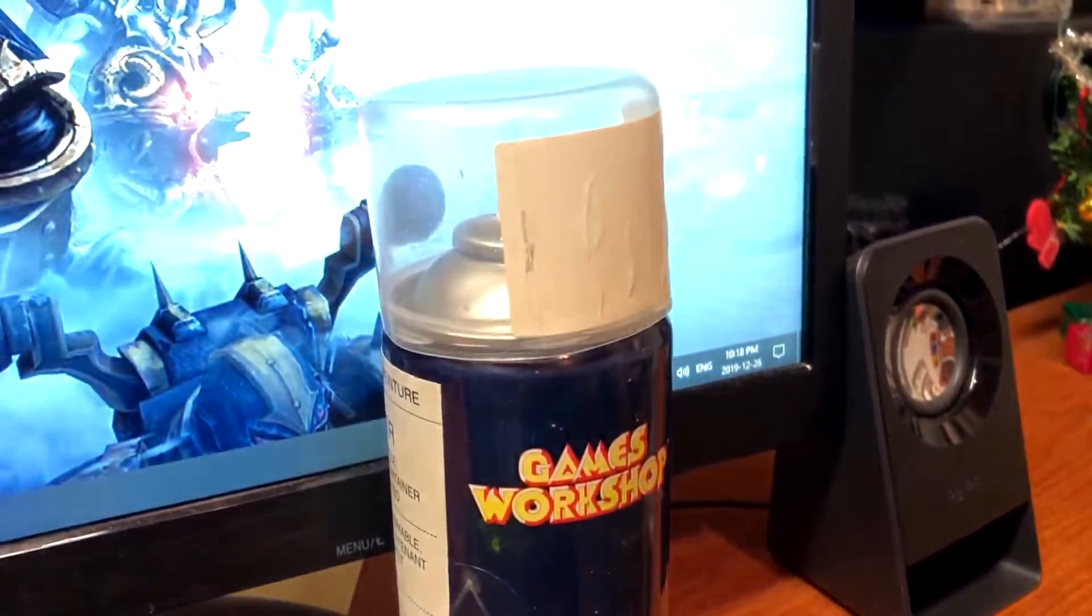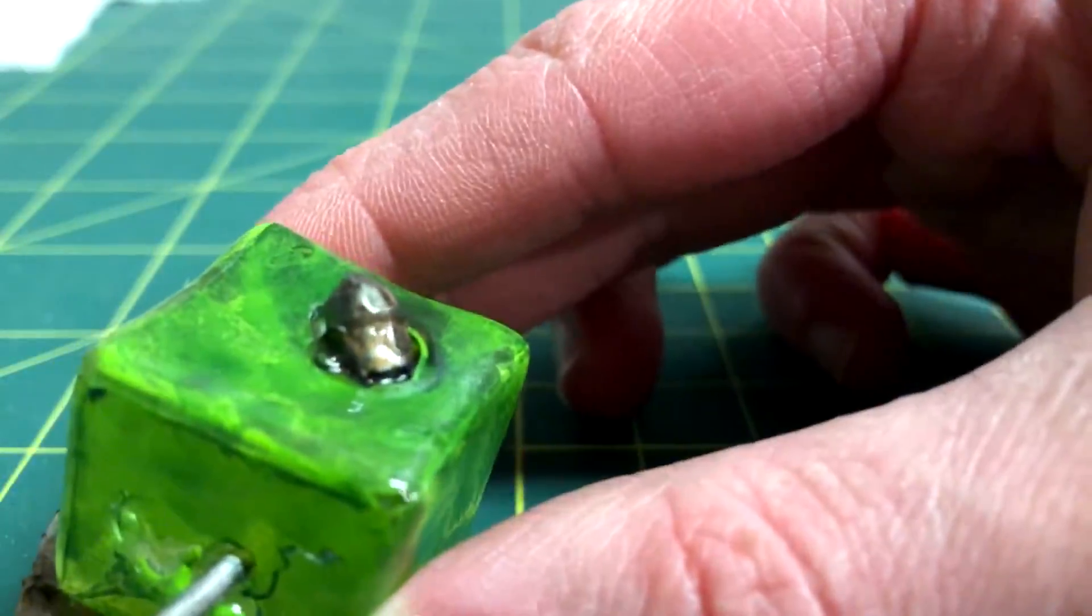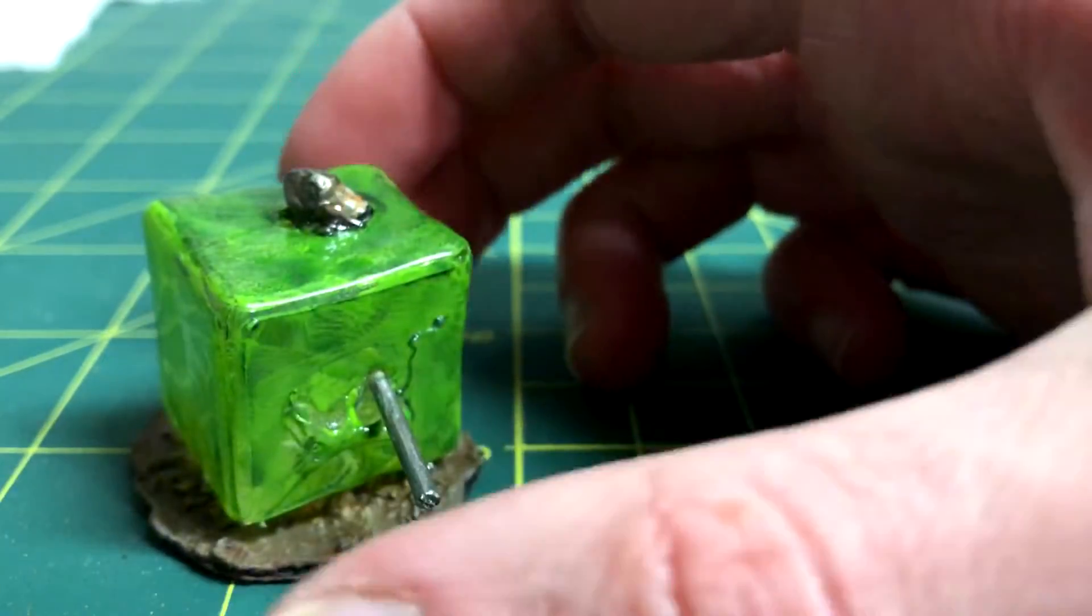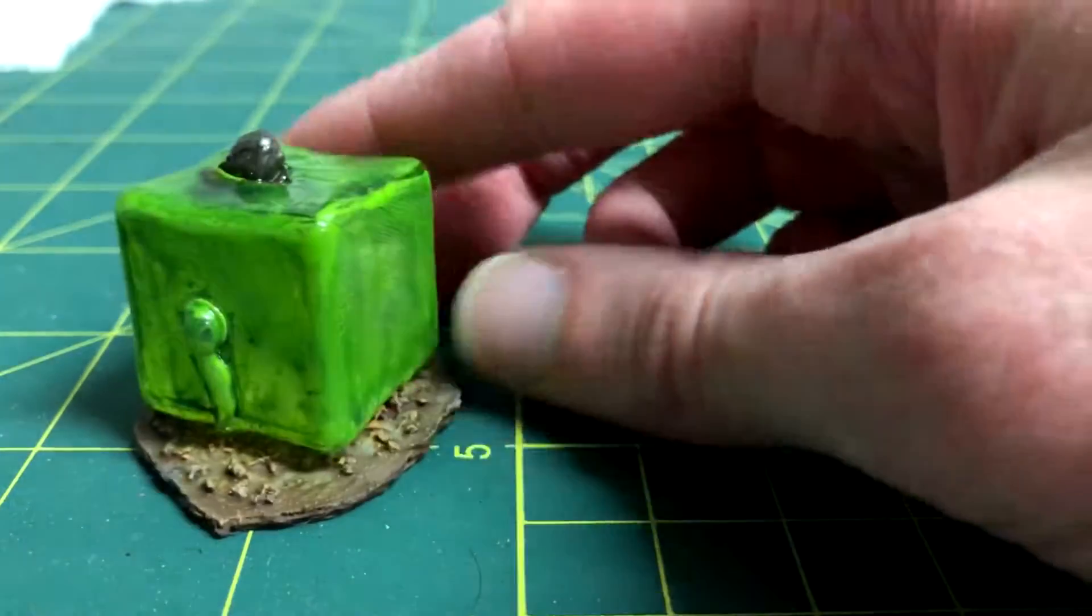Then, I gave the cubes one last clear coat to finish them off. Even though the skull has little detail, it works really well because it looks like the features were either dissolved or consumed by the slime.